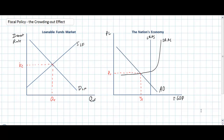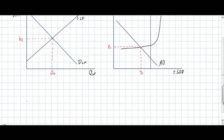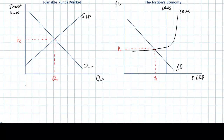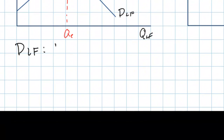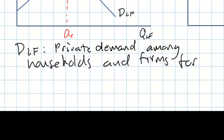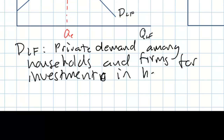Before illustrating the crowding out effect on the aggregate demand-aggregate supply model, we must first introduce a new graph: the market for loanable funds. Loanable funds refers to private money available in the nation's banking system for firms and households to borrow in order to finance private investments in things such as capital goods and homes. The demand for loanable funds refers to the private demand among households and firms for investments in homes or capital.